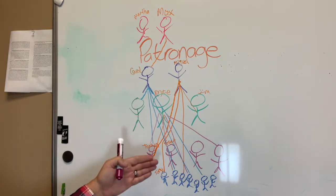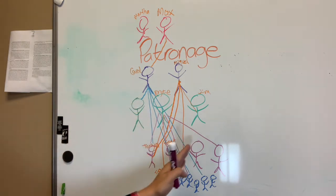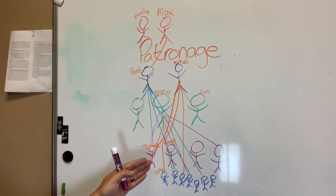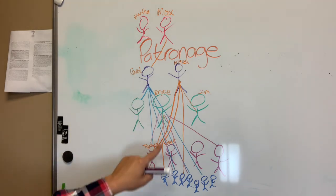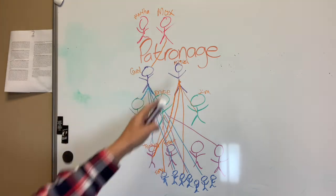As you start to draw the connections between the various clients and patrons, you begin to see that it becomes this sort of messy web very quickly because these aren't one-to-one. It's not that Tony is a client to the patron Miguel and that is his sole connection.